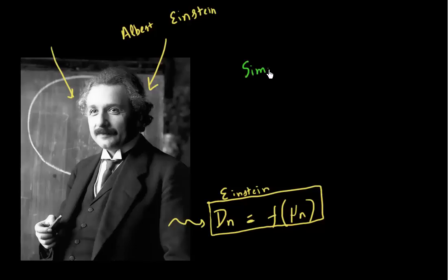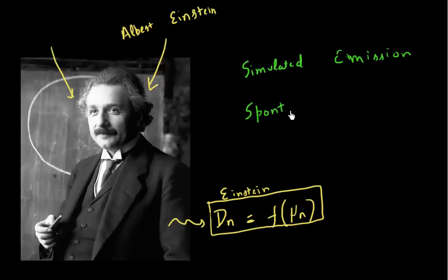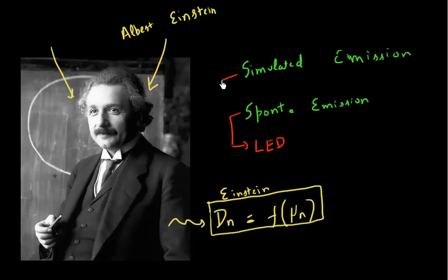He described this process of stimulated emission and how it's different from spontaneous emission, and we'll discuss this in the next video. What we'll see is that LEDs are essentially devices which operate with spontaneous emission, while the laser is a device which uses stimulated emission. And that's what makes the spectrum which comes out of these two devices very different.